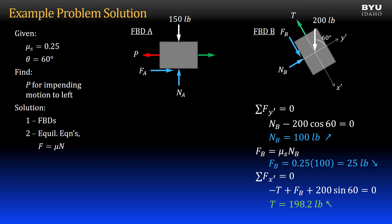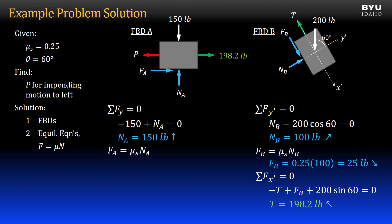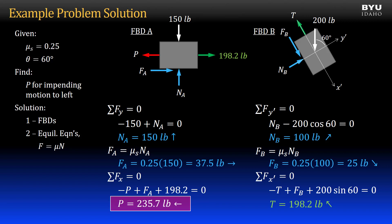Now I move to block A and transfer over the cable force. Summing forces in the Y direction gives a normal force of 150 pounds acting upward. Using the static friction equation, the friction force magnitude is 37.5 pounds acting to the right. Finally, summing forces in the X direction gives the applied force P as 235.7 pounds acting to the left.